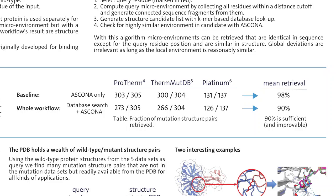The baseline is a subset of the whole workflow. The mean retrieval rate of non-wild type mutant structure pairs over three datasets is 98% for the baseline and 90% for the whole workflow. This shows that we lose 8% in comparison to the baseline when we use the whole workflow, which indicates that there is potential for improvement in the database search. However, a mean retrieval rate of 90% is probably already sufficient for many or even most applications.